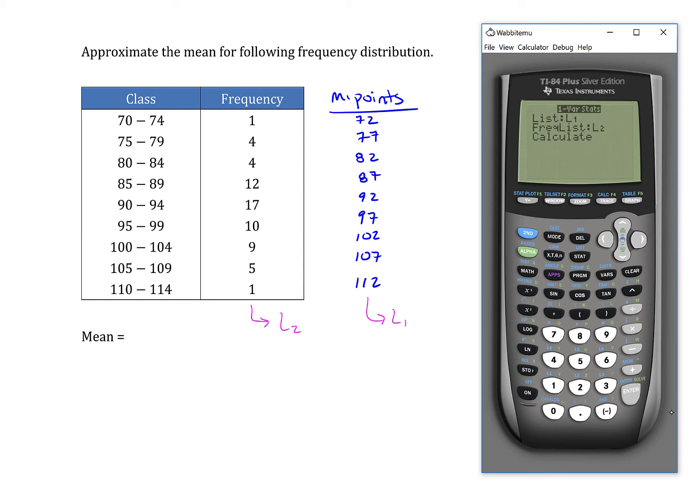If you're seeing this menu, that's great. The list that is being referred to is the list of midpoints that we have. So that's already set to L1. Frequency list is L2. So that's already set. That's great.